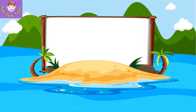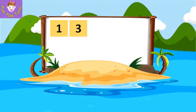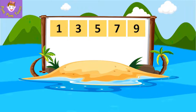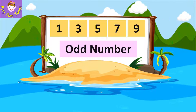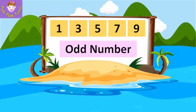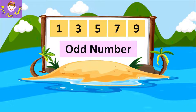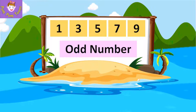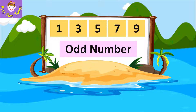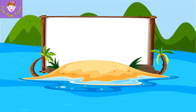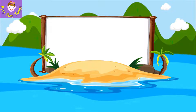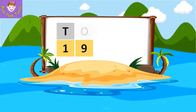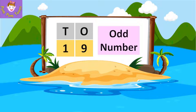A number which has 1, 3, 5, 7, or 9 in the one's place is called an odd number. Odd numbers always end with 1, 3, 5, 7, or 9. Look at this example: number 19. It has 9 in the one's place, so it is an odd number.